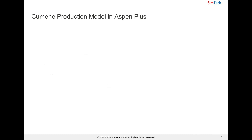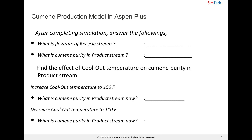After simulating, we will find answers for: What is the recycle flow? What is the purity of cumene in the product stream? Also, we will find out the effect of temperature of the cool block on cumene purity in the product stream by changing the temperature to 110 and 150 degrees Fahrenheit.